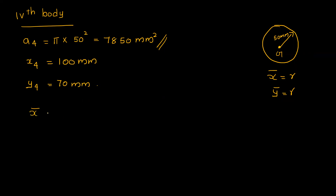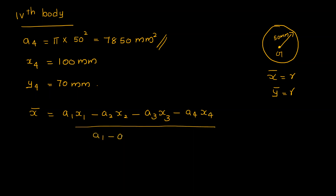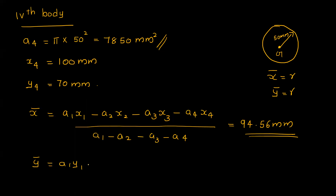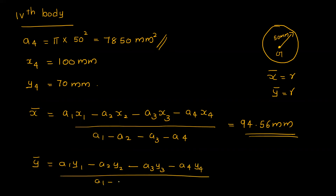Substituting all values: x-bar equals A1·X1 minus A2·X2 minus A3·X3 minus A4·X4 divided by A1 minus A2 minus A3 minus A4. That equals 61.05 mm. Similarly, y-bar can be found by substituting the corresponding y values.